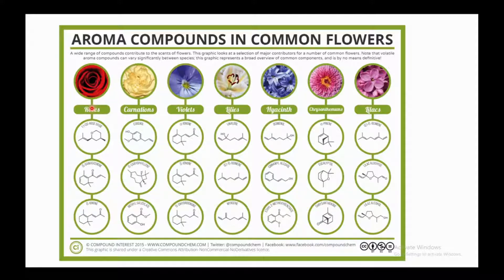In roses, the first compound is cis-rose oxide, having a structure with a double bond and a cyclic ether linkage. The second compound is beta-damascenone, having two double bonds inside the ring, one double bond outside the ring, a ketone functional group, and two methyl groups. The third compound is beta-ionone, similar to the top one but containing two double bonds and three methyl groups along with a ketone group.